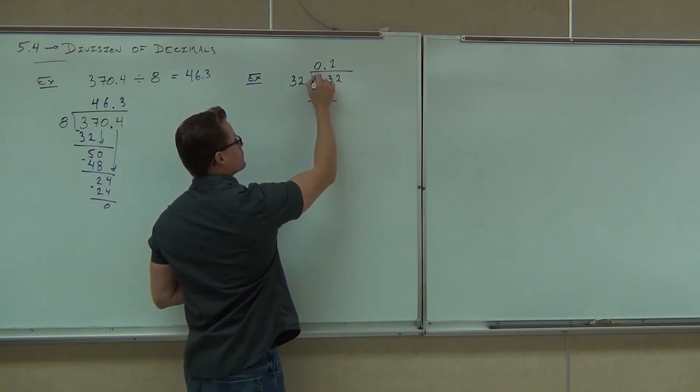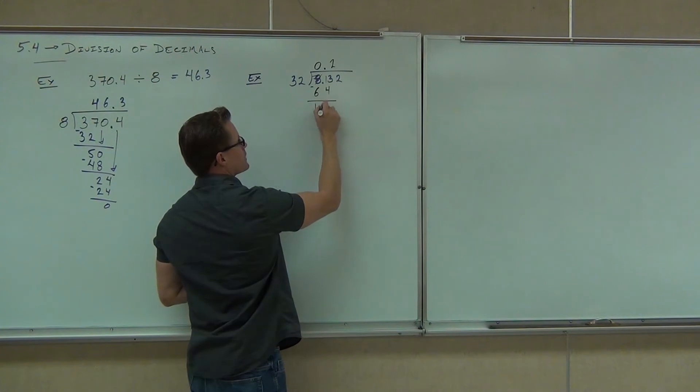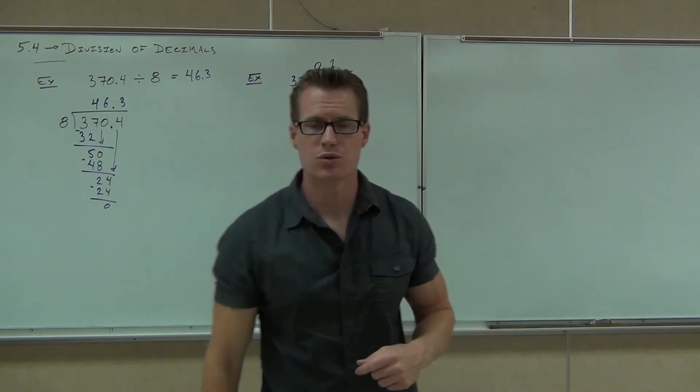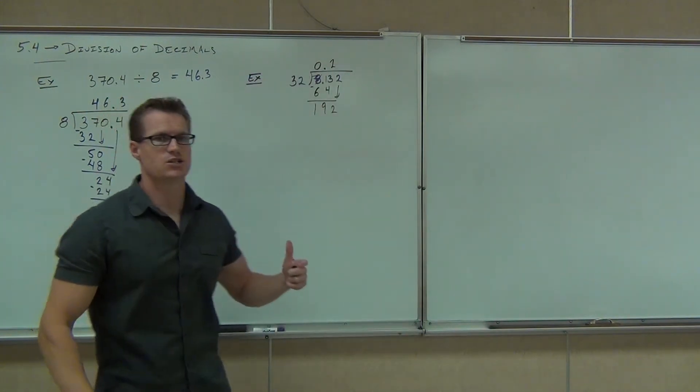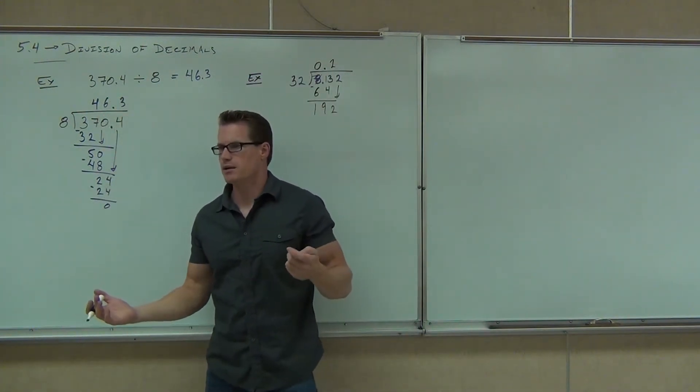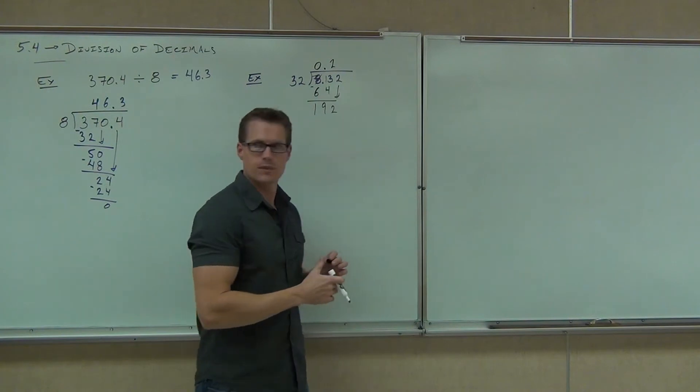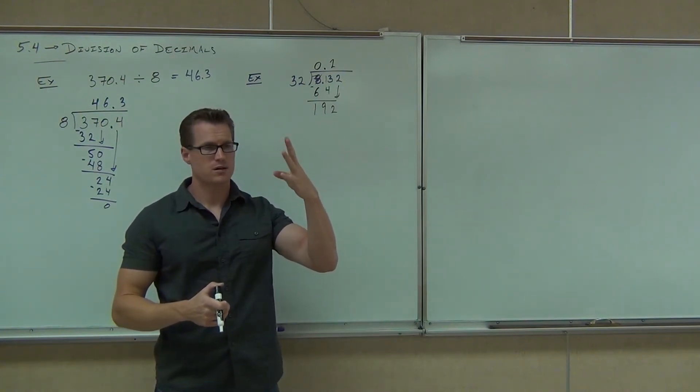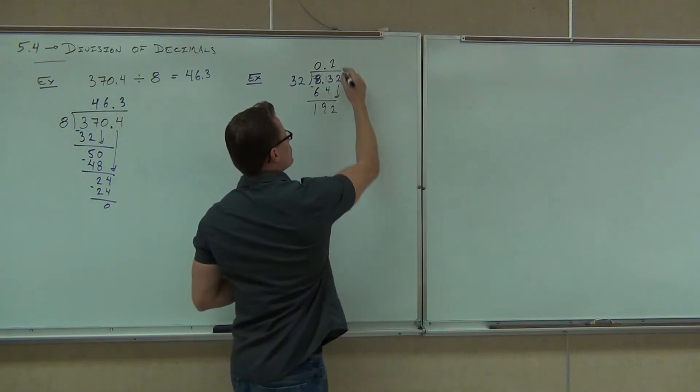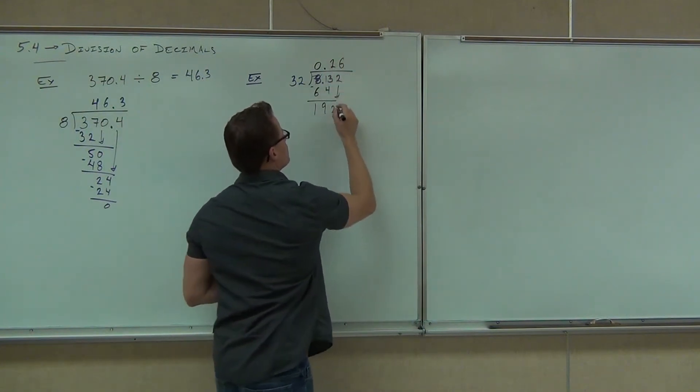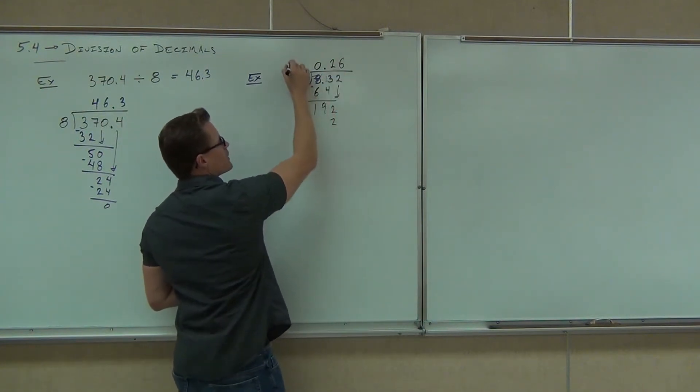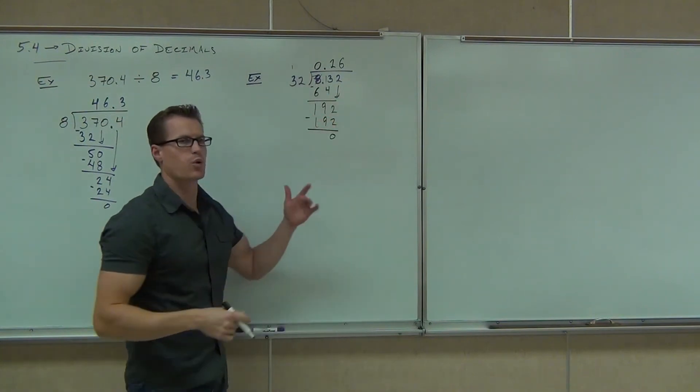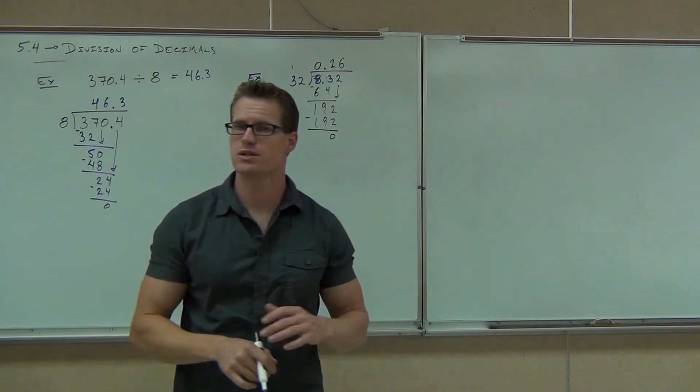Yeah, it looks like 19 to me. We'll bring down that 2, and then we check again. How many times does 32 go to 192? Estimate with the 30 if you'd like. Six. Bless you. 30, 60, 90, 120, 150, probably six times. So six times, that's 12. We'll carry our 1. We get 19. If I subtract, I get 0. So my answer again is 0.26, or 0.26.